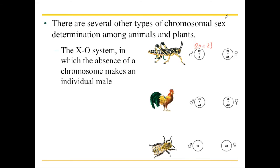In humans, the XO condition does make a difference because the individual isn't a male — it's a female phenotype with some reproductive problems. Whereas in grasshoppers, the absence of that chromosome makes it a perfectly normal male.